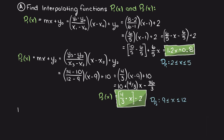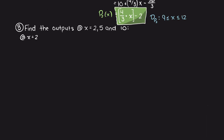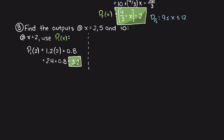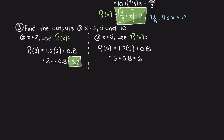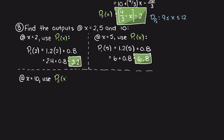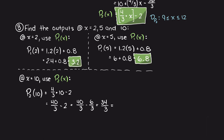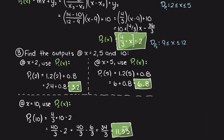Now that we have our interpolating functions, we just need to apply our desired inputs. For x equals 2, since that is in the domain of P1, we get an output of 3.2. For x equals 5, which again falls in the domain of P1, we get an output of 6.8. Lastly, x equals 10 falls in the domain of our second interpolating polynomial P2, and applying an input of 10 we get an output of 11.33. And there we go — we just answered all the questions we were asked.